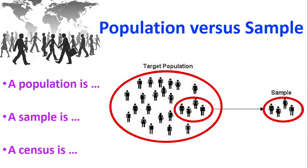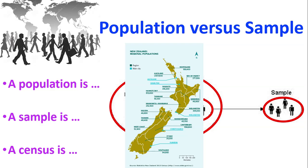If we're talking about a census, a census is much more like the population. This is run by the New Zealand government or the different governments in each country. They get every single person in the country to fill in a form with a bunch of questions so that they can find out more about it.